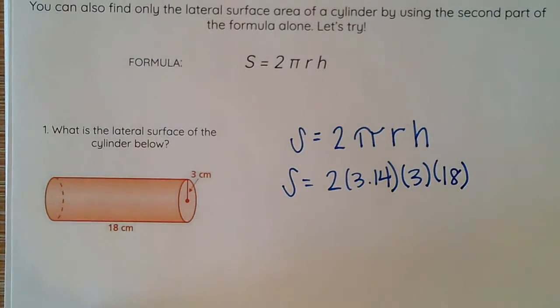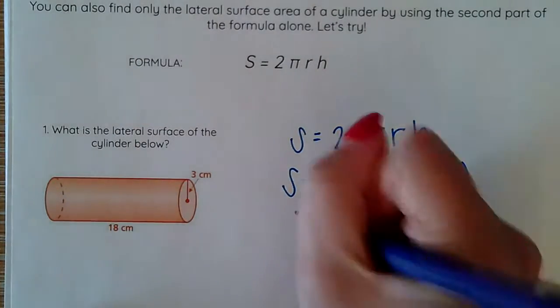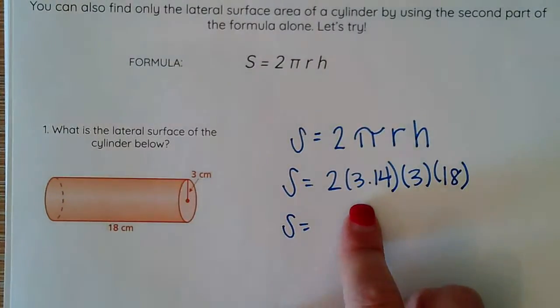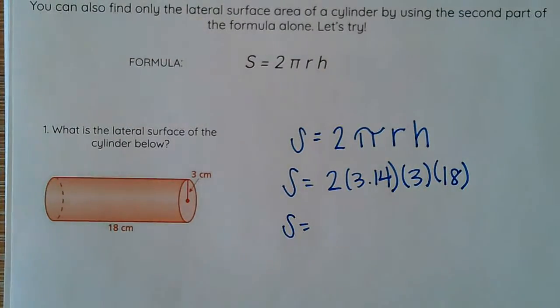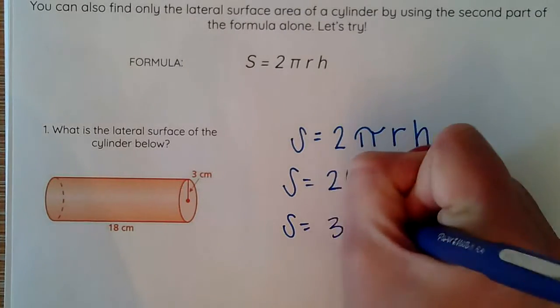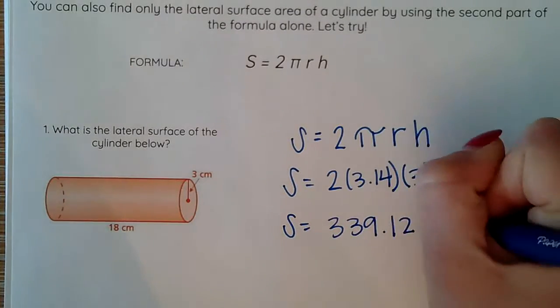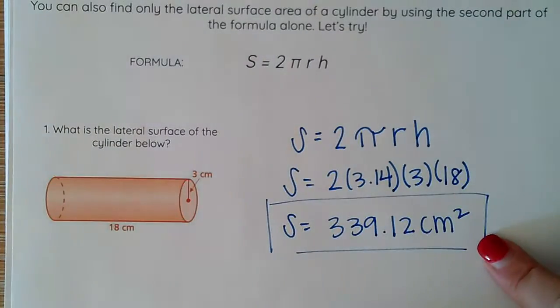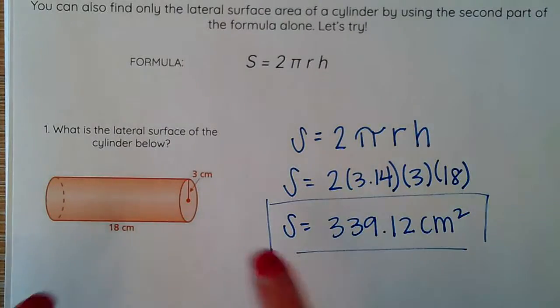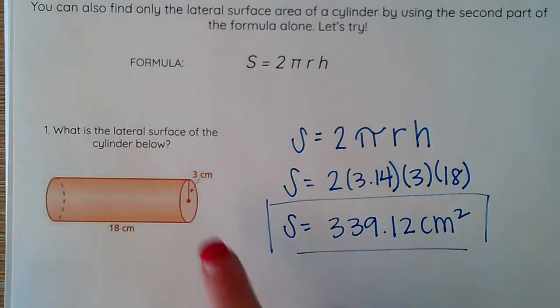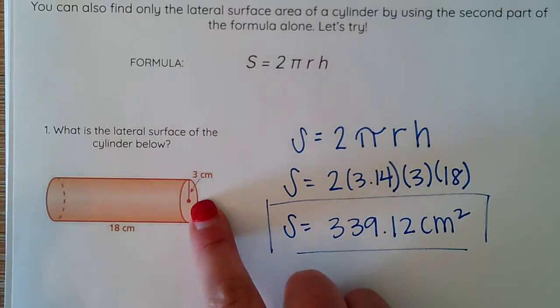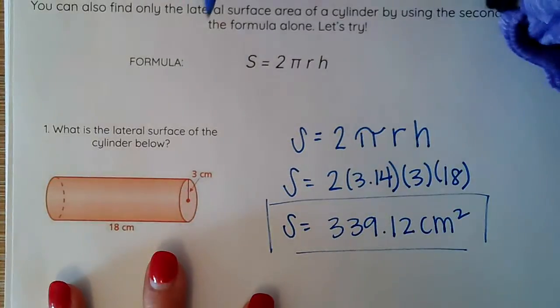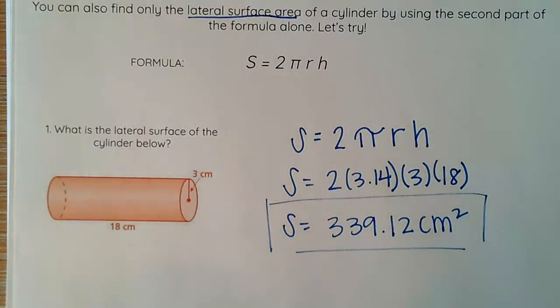So then I plug into my calculator: 2 times 3.14 times 3 times 18, getting me 339.12 centimeters squared. So again, this right here is the area of only this rectangular part. It does not include my circles, my circular bases. If it asks me for my lateral surface area, I only use that second part.